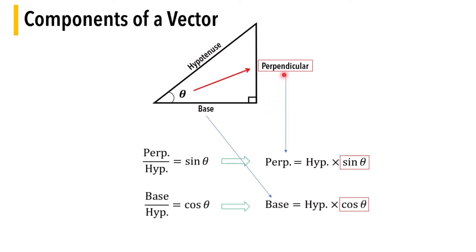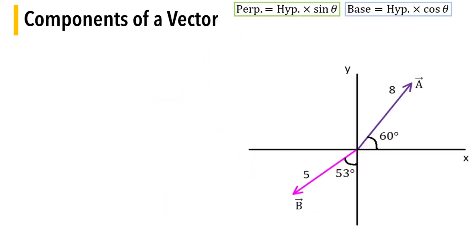Remember that the component in front of the angle is represented with sine theta times hypotenuse, and the component beside the angle is represented with hypotenuse times cos theta. Vector A is a normal case, so we focus on vector B, which is a bit different from the usual.